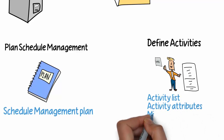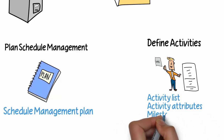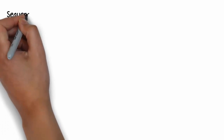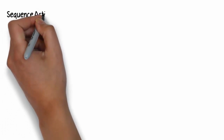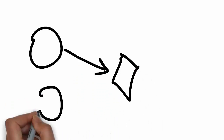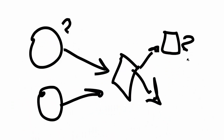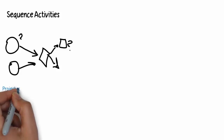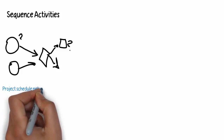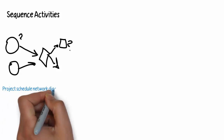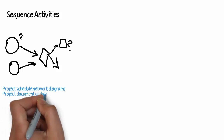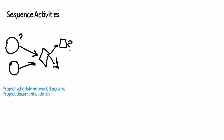From defining activities, we should have as outputs activity lists and the attributes for those activities, and even milestones. From there, we need to sequence these activities, which means dependencies or certain orders that are necessary. We can present this in a few different ways — project scheduling diagrams, project documentation, and updates to our project documents.